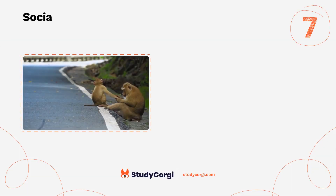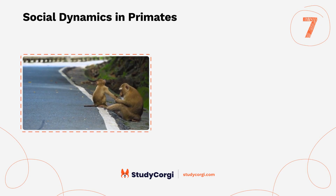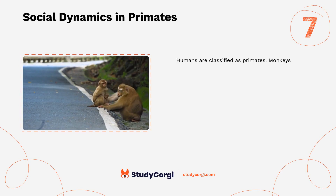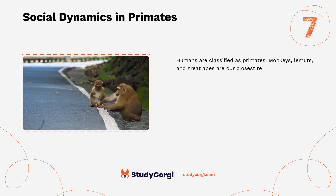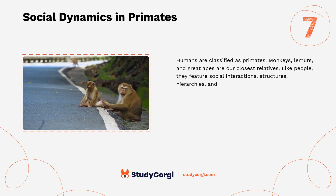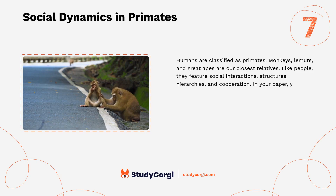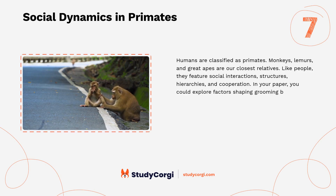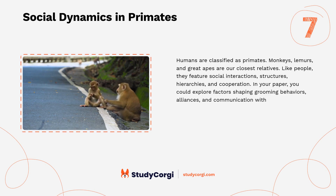Social Dynamics in Primates. Humans are classified as primates. Monkeys, lemurs, and great apes are our closest relatives. Like people, they feature social interactions, structures, hierarchies, and cooperation. In your paper, you could explore factors shaping grooming behaviors, alliances, and communication within primate groups.